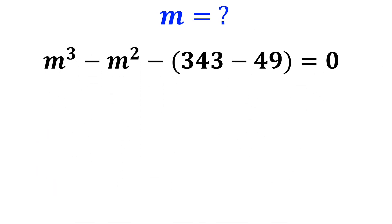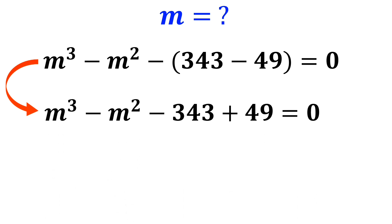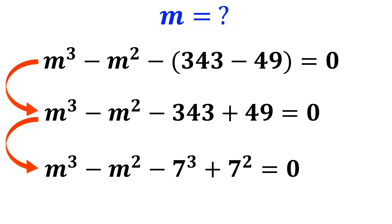Alright, we multiply the negative sign before the parenthesis by both numbers inside. So this expression simplifies to m cubed minus m squared minus 343 plus 49 is equal to zero. Next, we rewrite these two numbers as powers of 7.